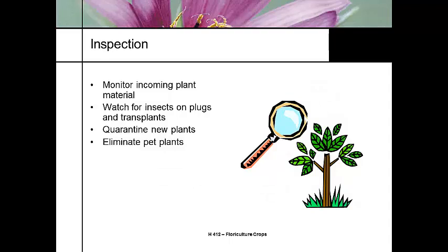Inspection includes monitoring incoming plant material. We also want to think about weed control — one of the best things you can do to keep pests down is keep weeds out from under the benches and outside the property. Greenhouses located near hay fields, especially alfalfa, can see thrips infestations when the hay is baled. The thrips move from the flowers into the greenhouse. So it's good to have a good weed management program as part of your sanitation.